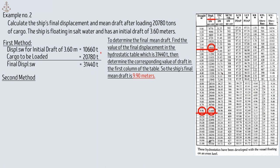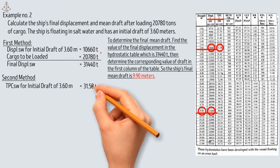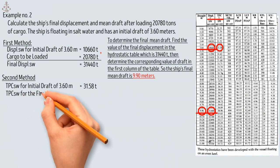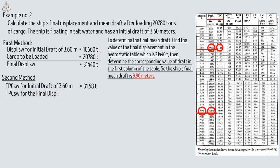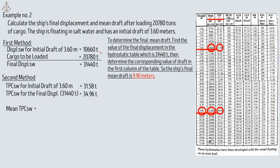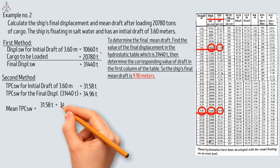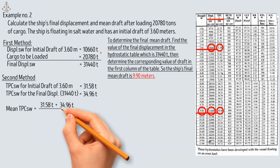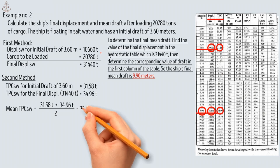For the second method: extract the TPC in salt water for the initial draft of 3.60 meters, which is 31.58 tons. The final displacement is 31,440 tons, and the corresponding TPC in salt water is 34.96 tons. The mean TPC equals (31.58 + 34.96) / 2 = 33.27 tons.